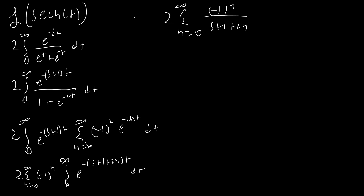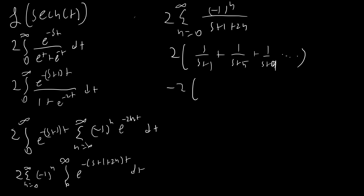The positive terms look like this: the first positive term (n=0) is 1/(s+1), the next (n=2) is 1/(s+5), then 1/(s+9), and so on. For the negative terms it's 1/(s+3) — because we have s plus 1 plus 2n — then 1/(s+7), then 1/(s+11), and so on, since we only have odd numbers.